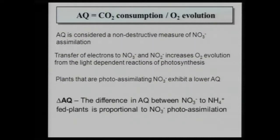Delta AQ: if I feed plants with ammonium, they won't have nitrate assimilation, because ammonium is next in the metabolic step. So I compare plants fed only with ammonium versus plants fed only with nitrate as the nitrogen source. When fed with nitrate, we have nitrate assimilation. I compare the AQ of these two plants, and this I call delta AQ. Delta AQ is proportional to nitrate photoassimilation, and I will prove it.